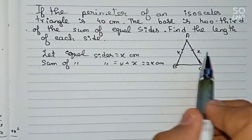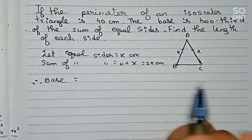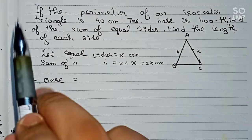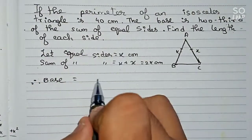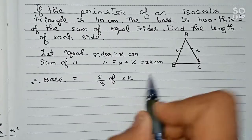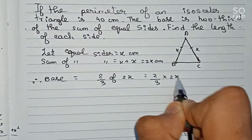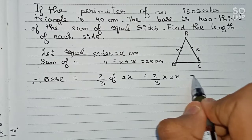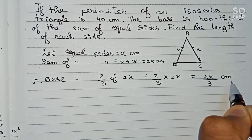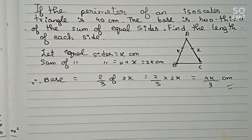The sum of the equal sides means this side plus this side. In the question, it is given that the base is two-thirds of the sum of the equal sides. So the base equals two-thirds of 2x, which equals 4x/3 centimeters. Therefore, our base is 4x/3 centimeters.